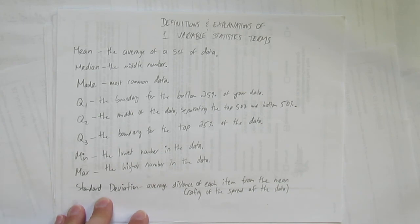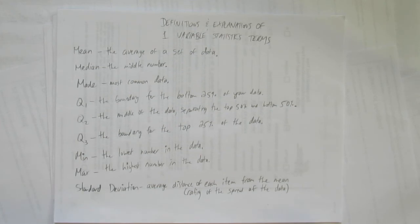So, there you've got nine definitions: mean, median, mode, Q1, Q2, Q3, the quartiles, min and max, and standard deviation with some explanation on top of what I wrote.